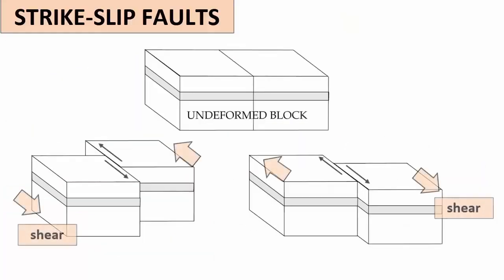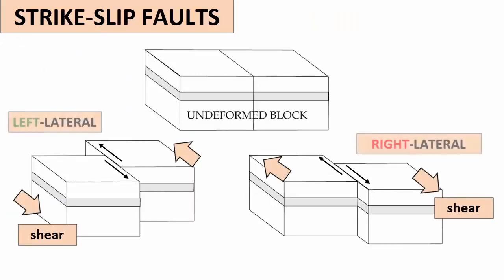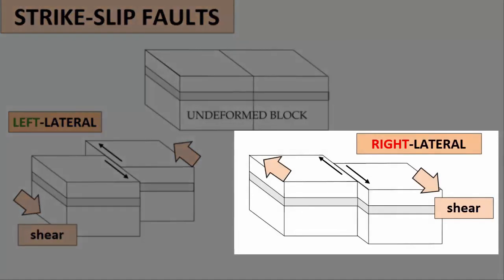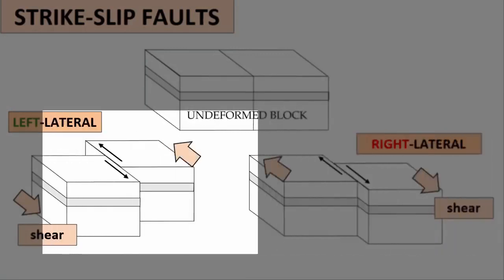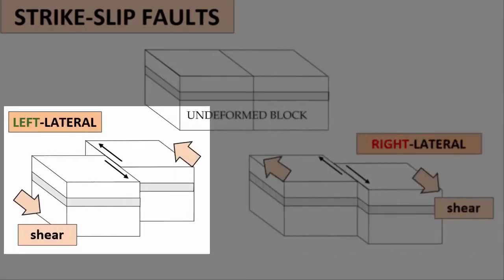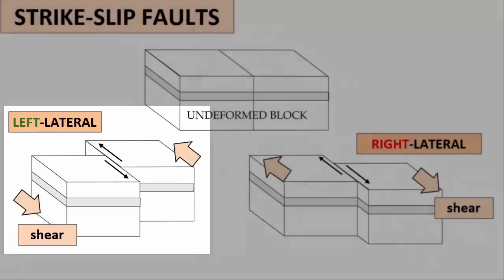Now let's return to strike-slip faults. Strike-slip faults can be further subclassified into right-lateral and left-lateral. Along a right-lateral strike-slip fault, one side of the fault appears to have slipped right relative to the other. Along a left-lateral strike-slip fault, one side appears to have slipped left.